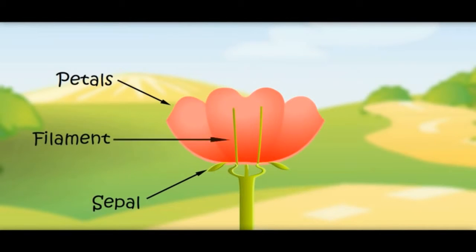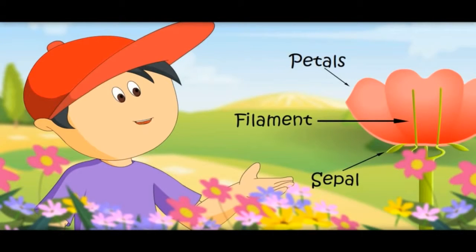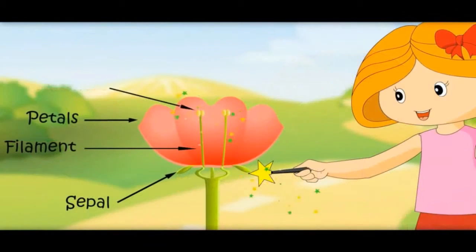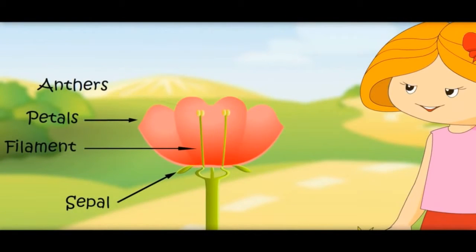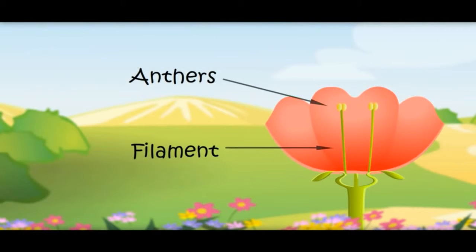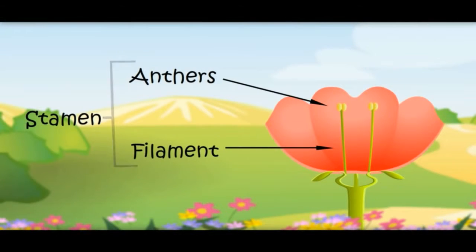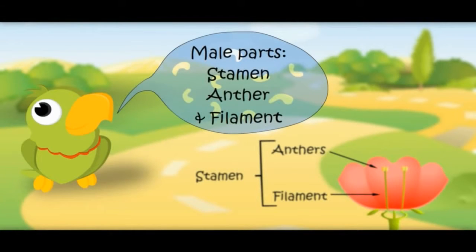Here comes the filaments. Bring a few anthers too. These filaments and anthers are the male parts of the flower. Jointly, these are called stamen. Male parts: stamen. Anthers and filaments.